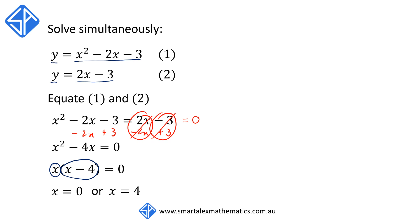So let's start with x equals 0. When x equals 0, we're going to sub x equals 0 into equation 2. And this is because equation 2 is much simpler than equation 1. So for equation 2, we've got y equals 2x minus 3. If we replace the x with 0, we're going to get y equals 2 times 0 minus 3. And that's going to give us negative 3. So our first pair of solutions is x equals 0 and y equals negative 3.